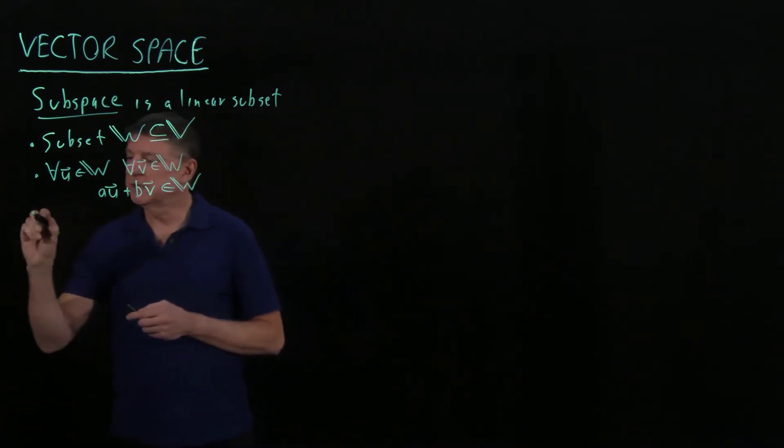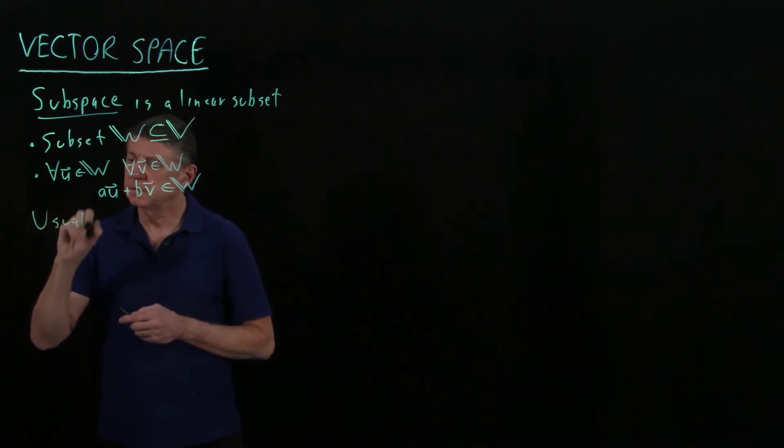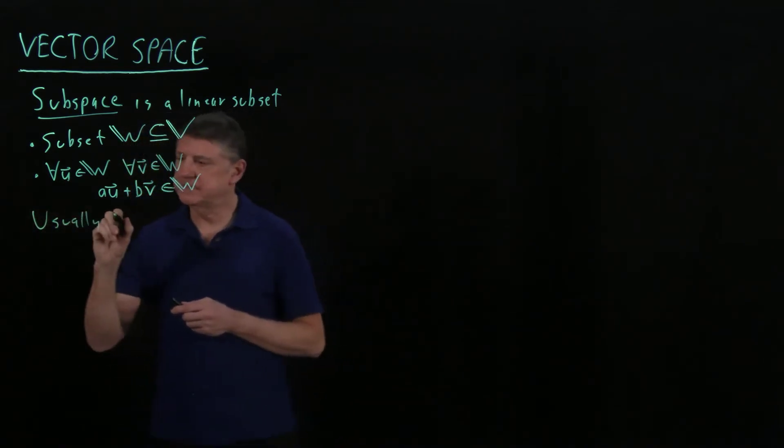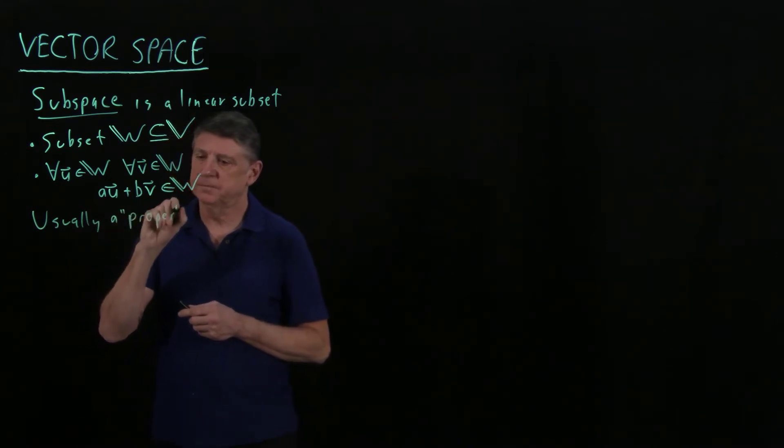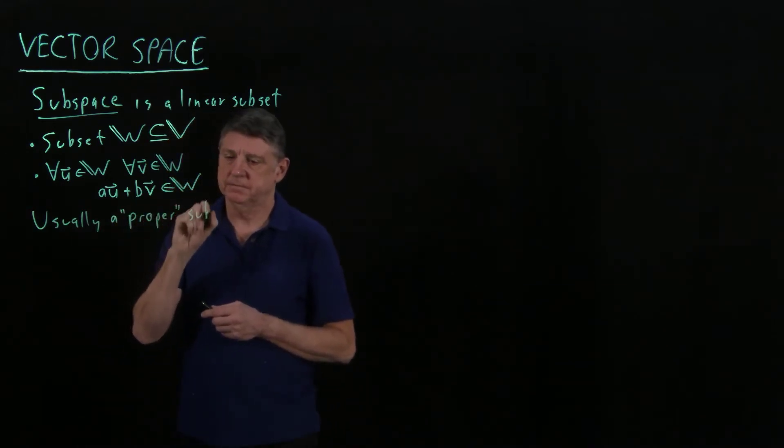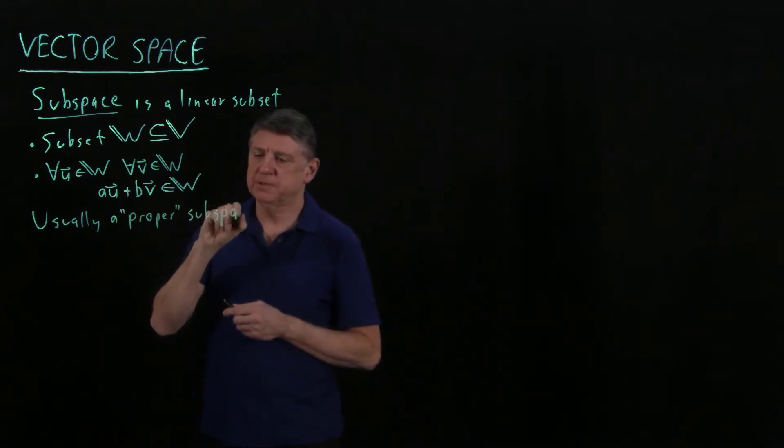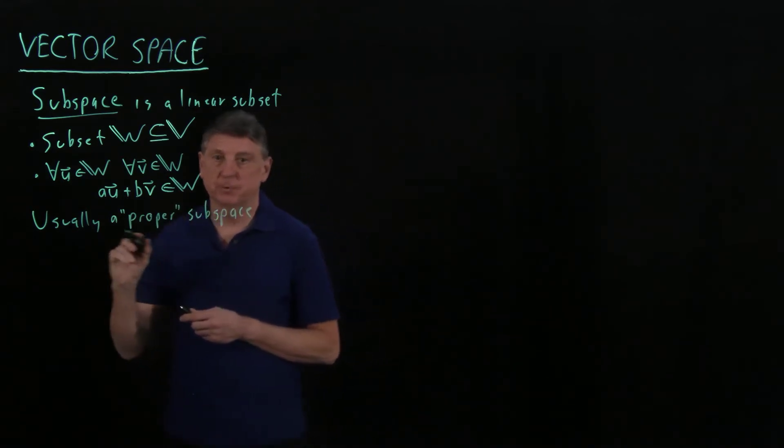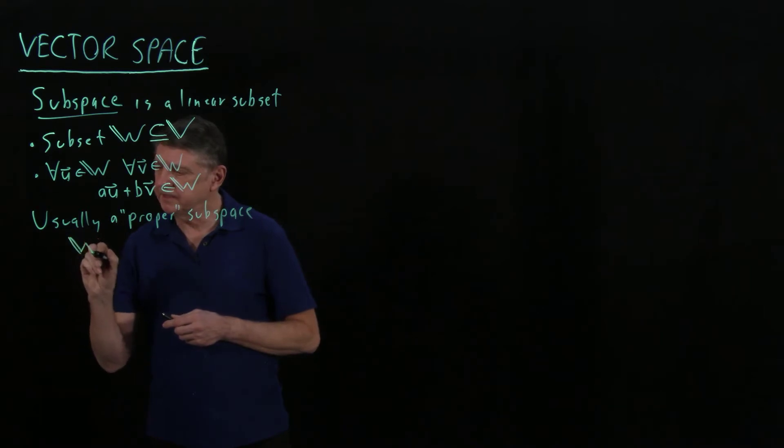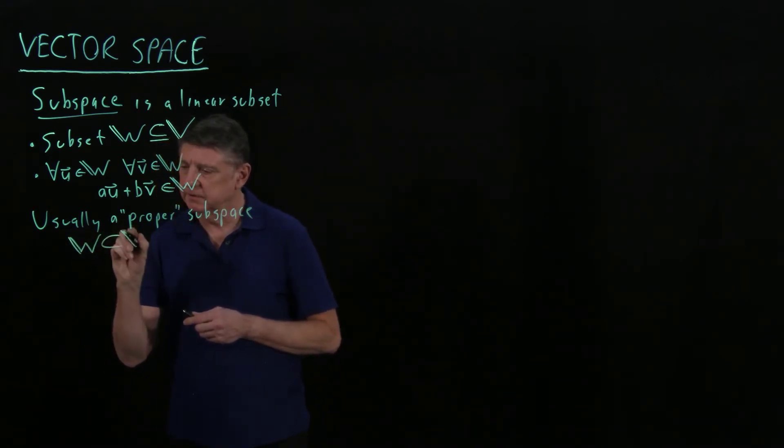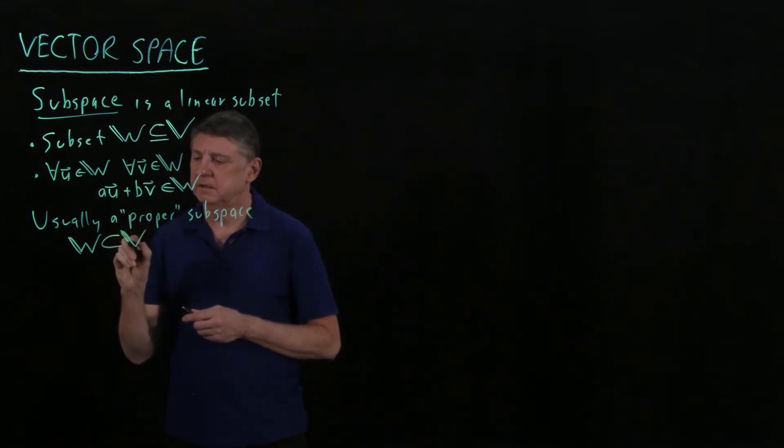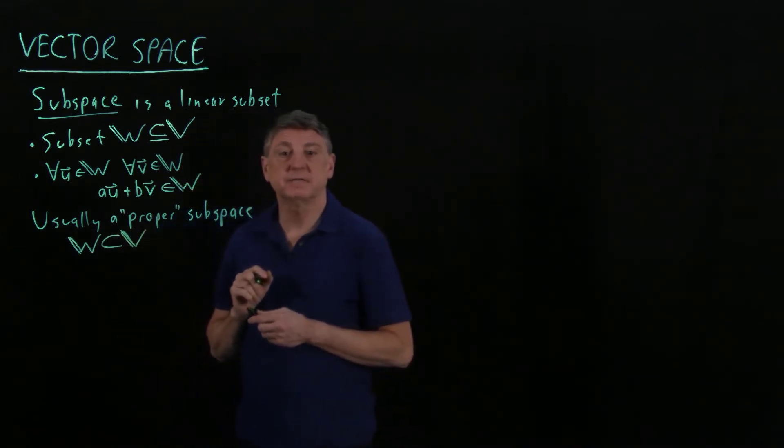And usually, usually what we have is a, and this is called in mathematics, a proper subspace. And what a proper subspace is, that's a straightforward concept, what we mean is that the double-barreled set w is strictly contained in the larger set v.